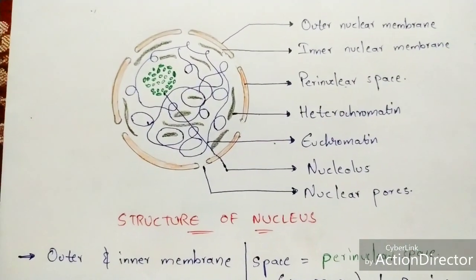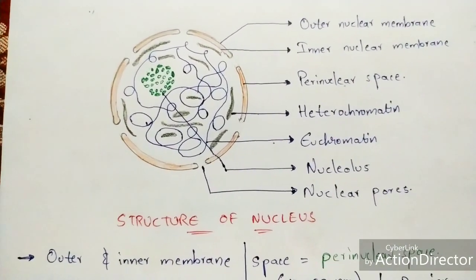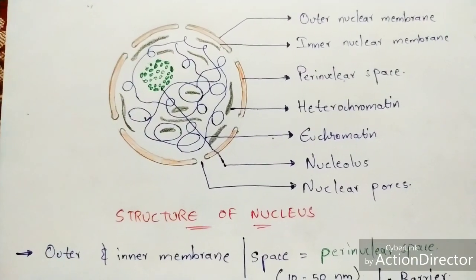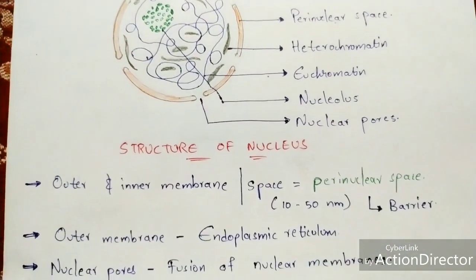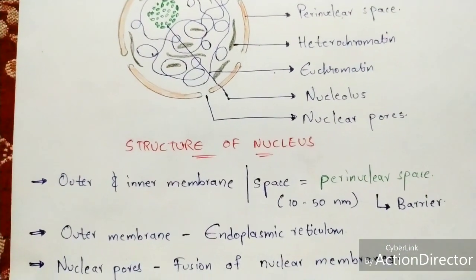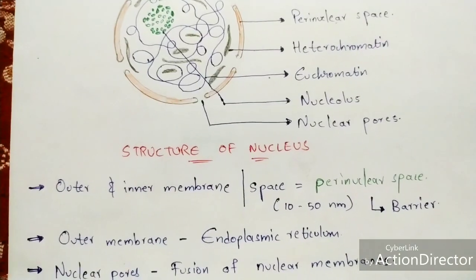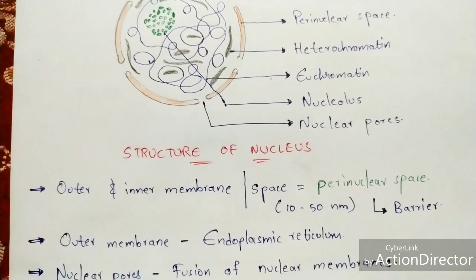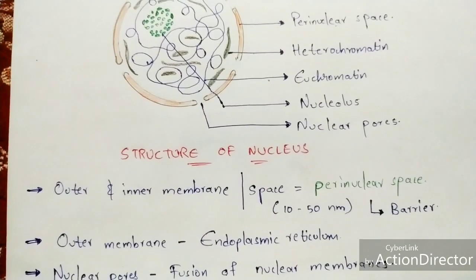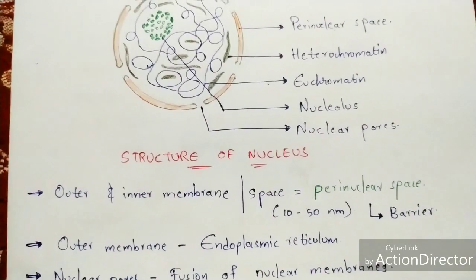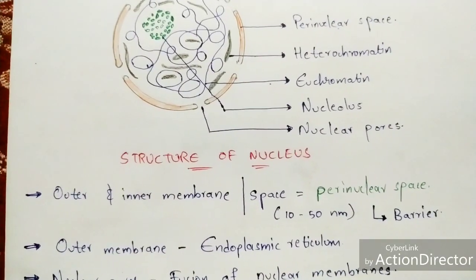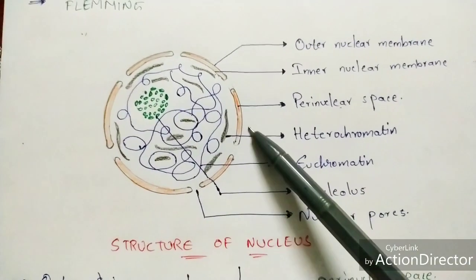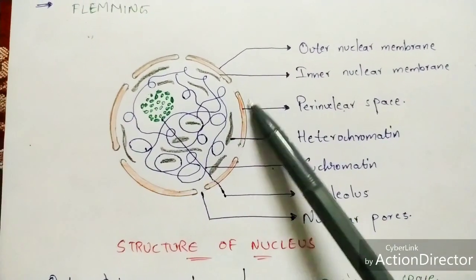The perinuclear space ranges with a diameter of 10 to 15 nanometers — remember this point. Coming to the endoplasmic reticulum: a brief explanation of it has already been given, and the link to that video is in the description box. The endoplasmic reticulum gets attached towards the outer membrane of the nucleus.